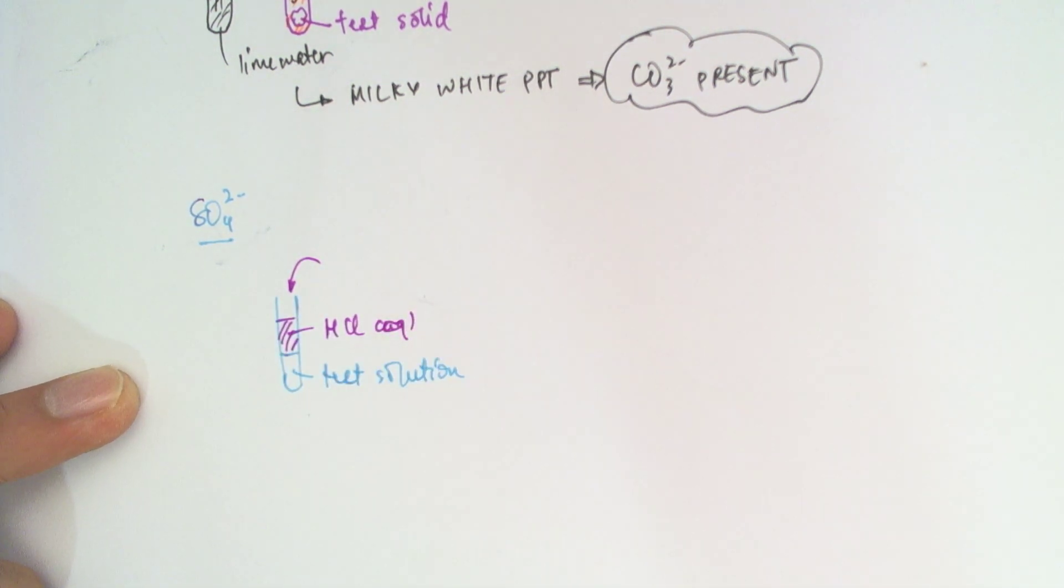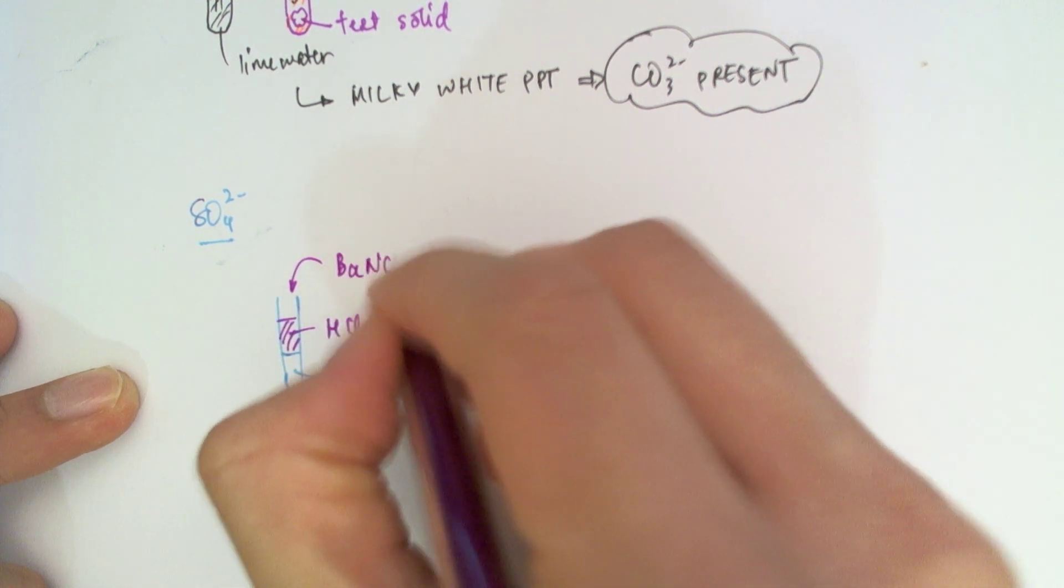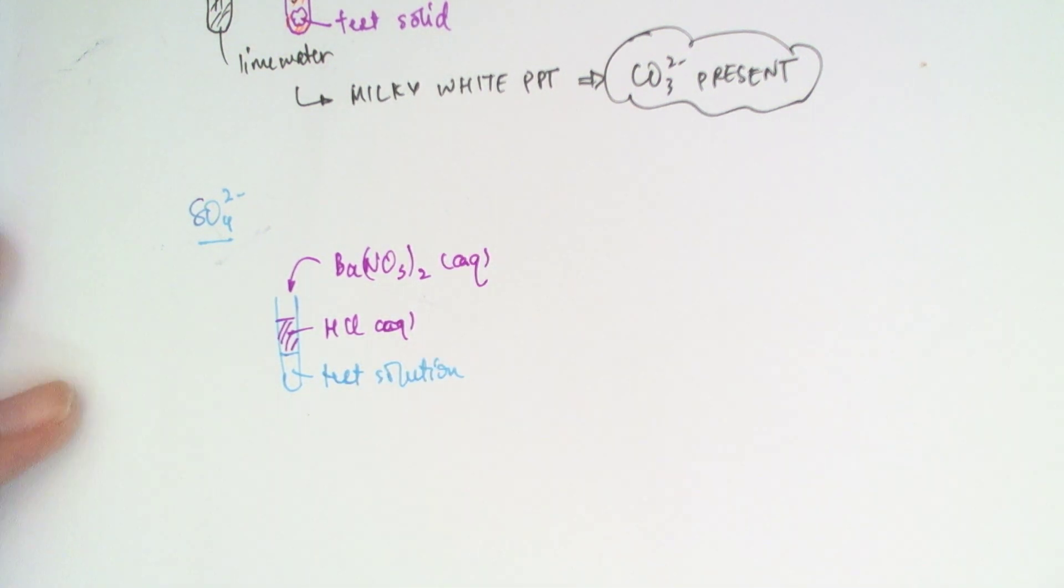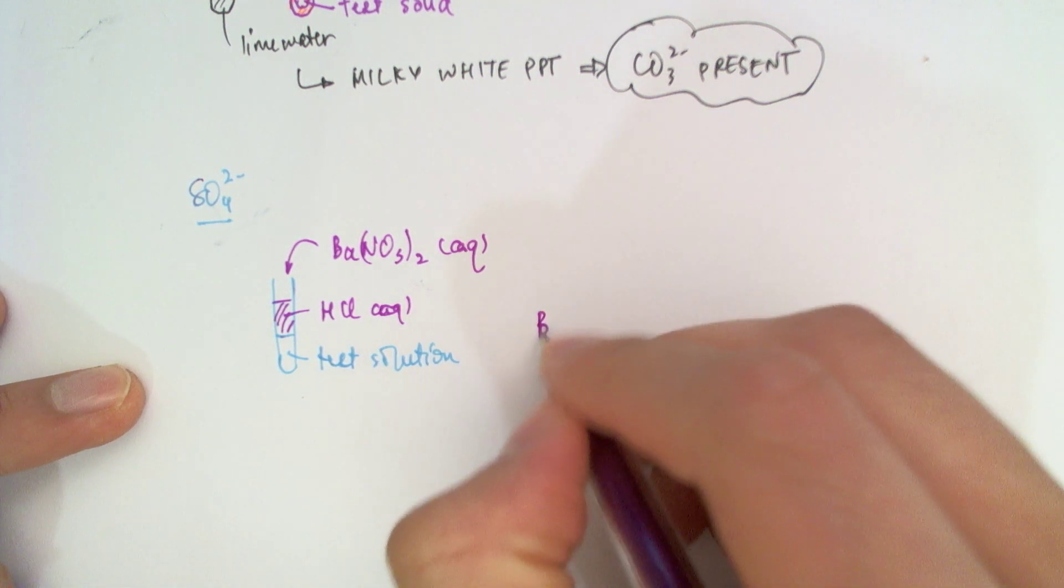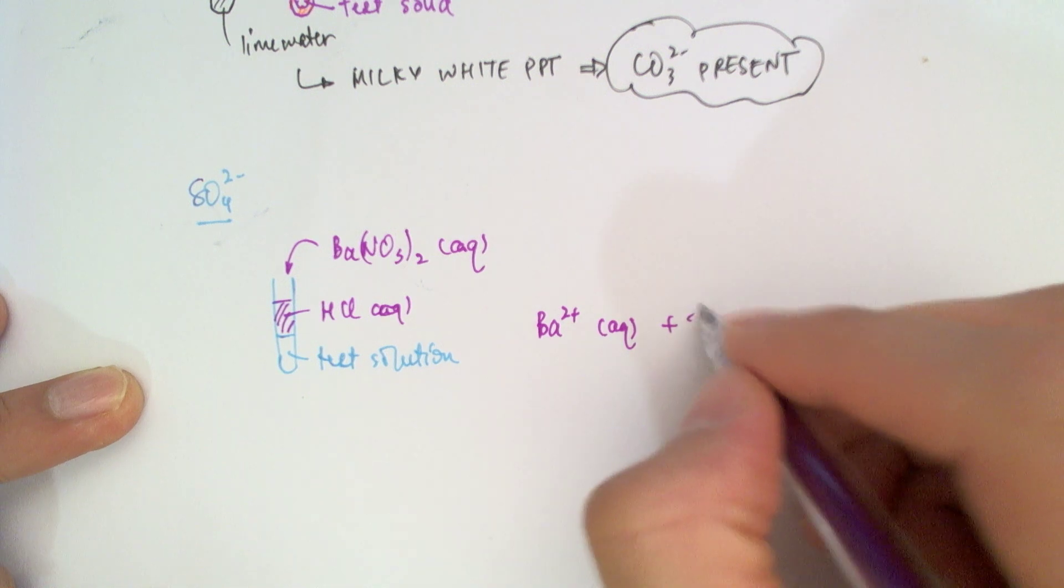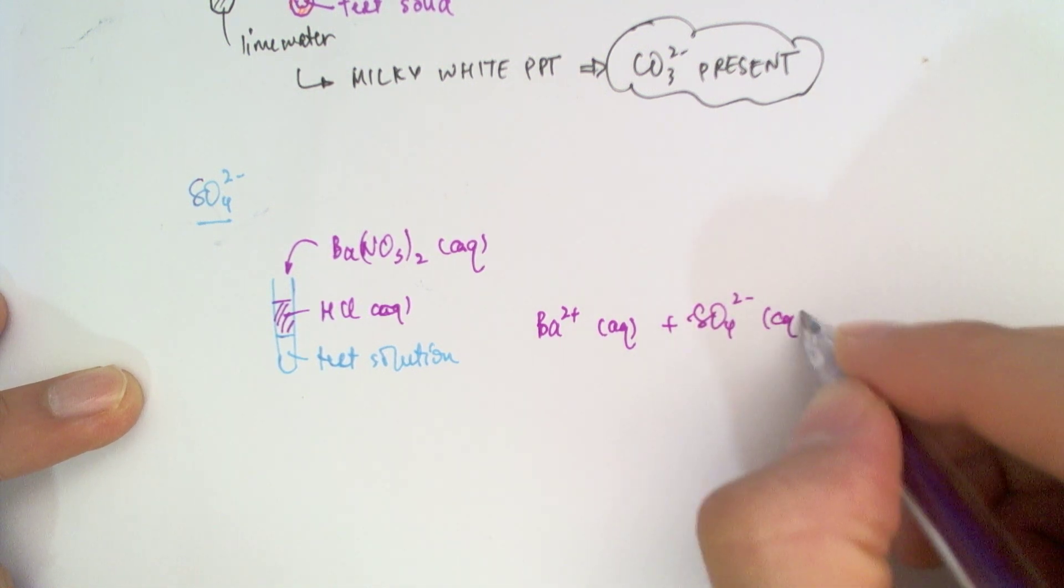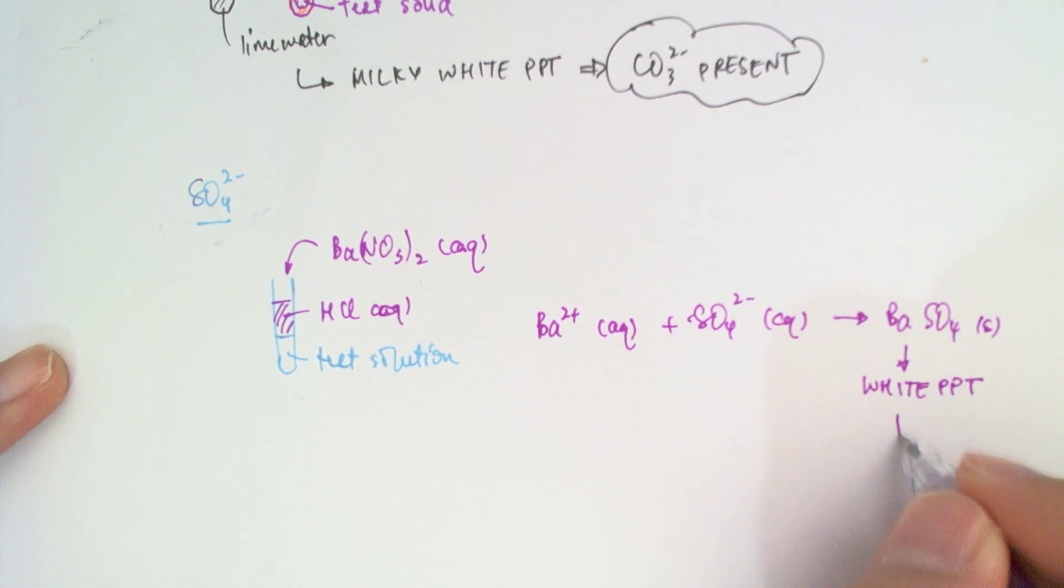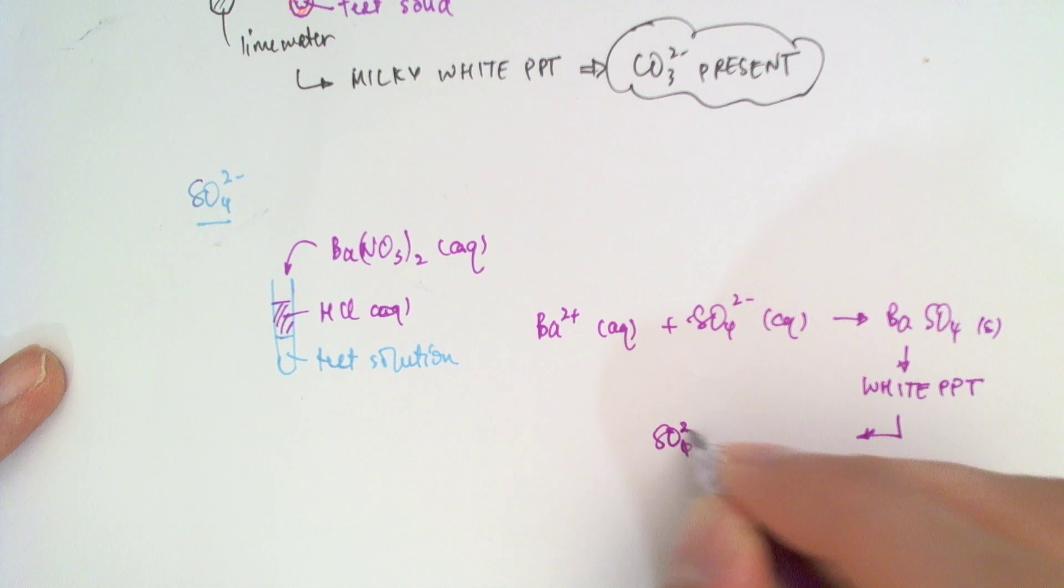Once these two are mixed together, you add in some barium nitrate. Barium nitrate is of course soluble because all nitrates are soluble. So what is going to happen is the barium ions will react with the sulfate ions to give me a barium sulfate precipitate. And this precipitate is going to be white in color. So a white precipitate confirms the presence of sulfate ions.